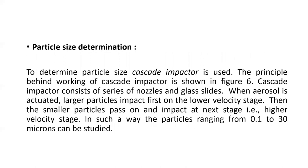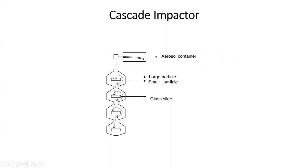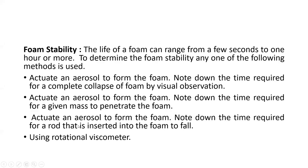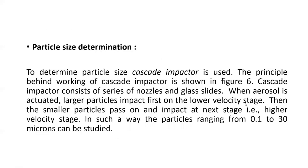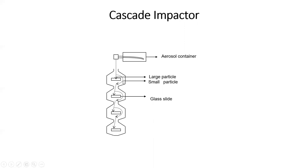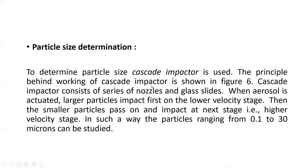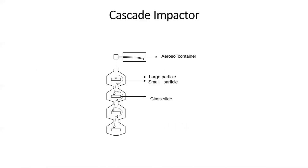Particle size determination is very important for aerosols. To determine the particle size, we use a cascade impactor. The cascade impactor consists of a series of nozzles and glass slides. When the aerosol is actuated, the larger particles impact first on the lower velocity stage, then the smaller particles pass on and impact at the next higher velocity stage. In short, larger particles fall on the low velocity stage and smaller particles fall on the high velocity stage. In this way, particles ranging from 0.1 to 30 microns can be studied and differentiated.